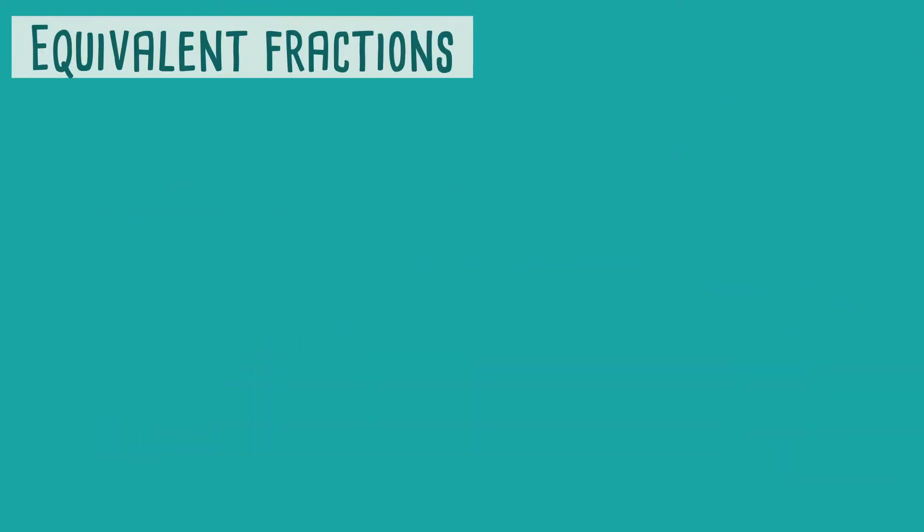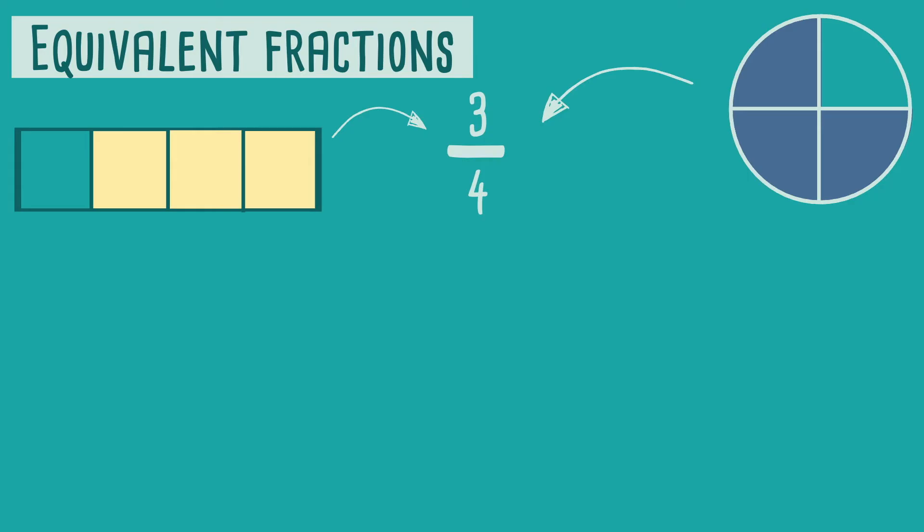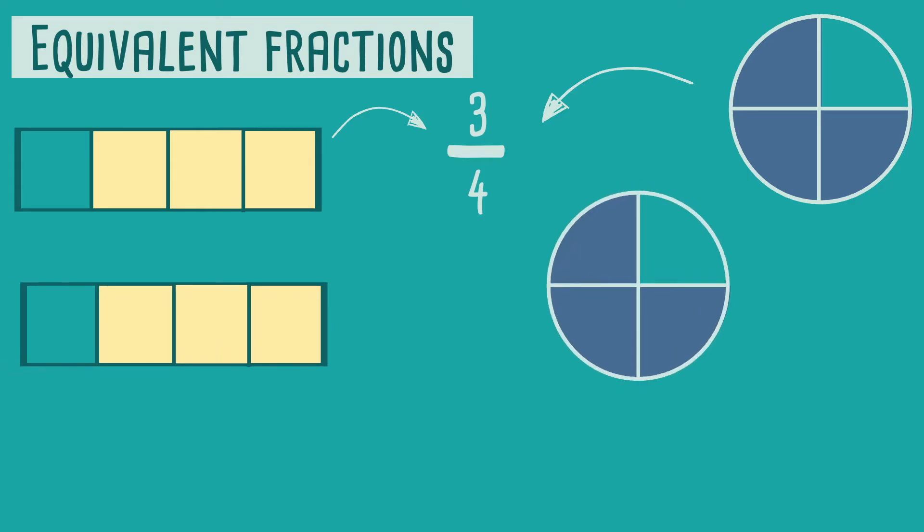Because a whole can be divided up in many different ways there are many different ways we can write the same fraction. For example, if we divide our circle and rectangle up into eight equal parts we can say we have six out of the eight parts as six out of the eight parts are shaded. In other words six eighths.